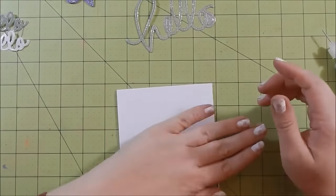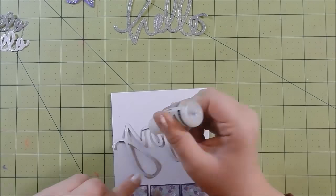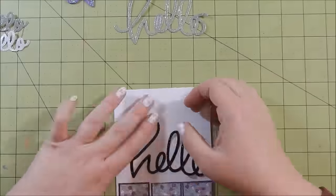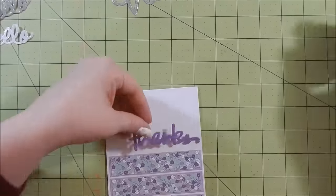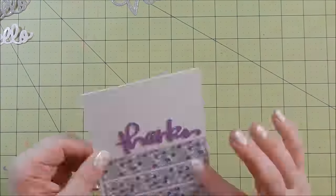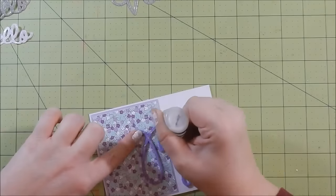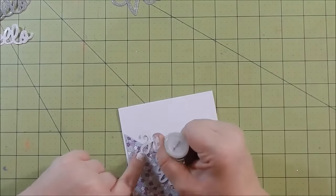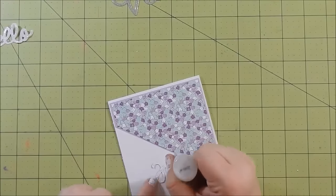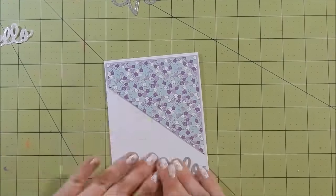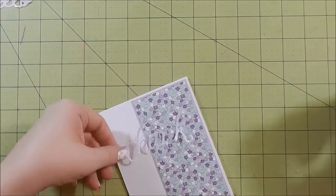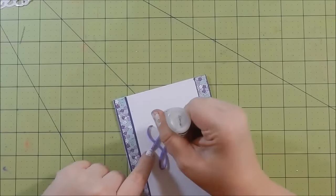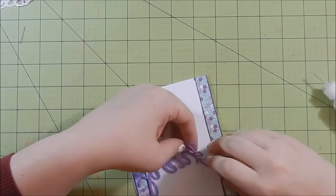For my adhesive, I am using multimedia matte because I knew that with these die cuts there would be a lot of shifting and adjusting, so I wanted to make sure that once my sentiments dried that there would be no shiny spots from the glue adhesive. And the multi-medium matte is perfect for that. I really wish it came in a bigger tube or a bigger container. I have the little tube, which I think is the only size I've seen, and then the jar, but the jar is useless to me with stuff like this.